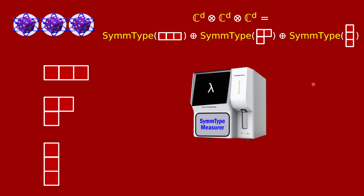This will be the measurement we want. In principle, it's possible to build a physical measuring device that takes in three D-dimensional particles and reads out a lambda on its screen — either one of the three Young diagrams, corresponding to the symmetry types. Building such a device is at least as hard as building a full-fledged quantum computer operating on three quantum systems. We probably won't be building this anytime soon, but hypothetically, once we have quantum computers, this measurement is known to be efficiently computable.